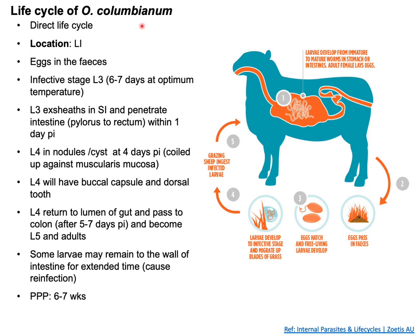The life cycle of Esophagostomum columbianum is direct — there is no involvement of an intermediate host. Adult male and female parasites are found in their predilection site in the large intestine. The female lays eggs which are passed through the feces. Within six to seven days at optimum temperature, development of L3 larvae occurs in the environment. The L3 migrates to the tip of grass blades, and the final host becomes infected by ingesting this L3 with grass.